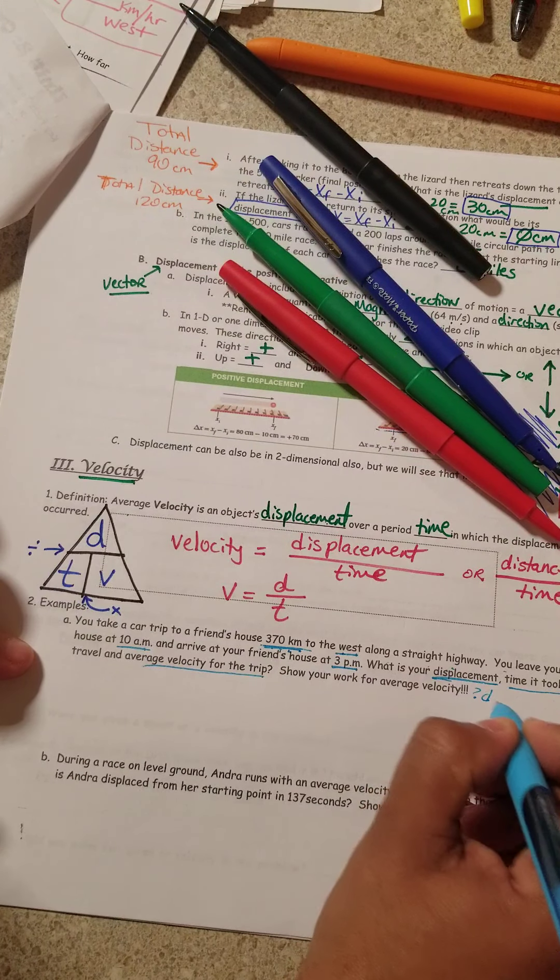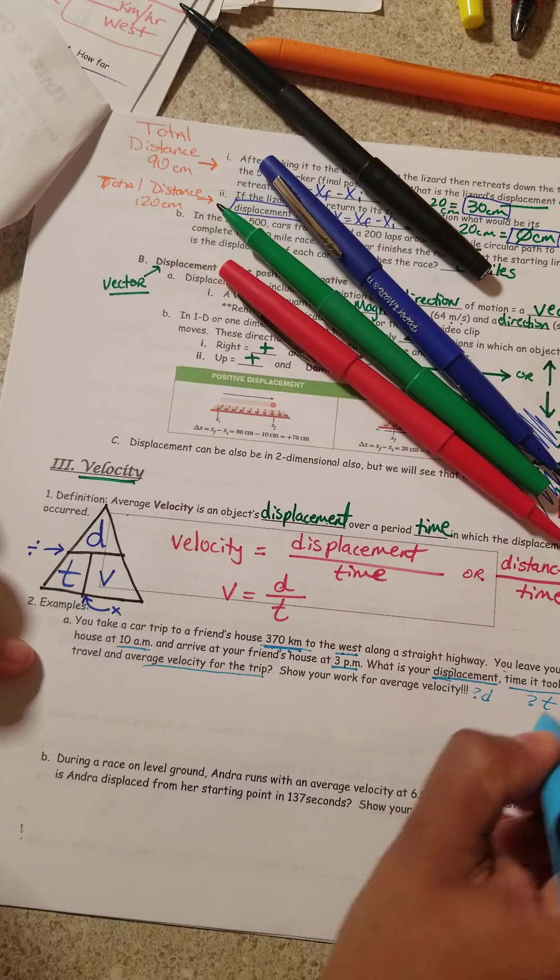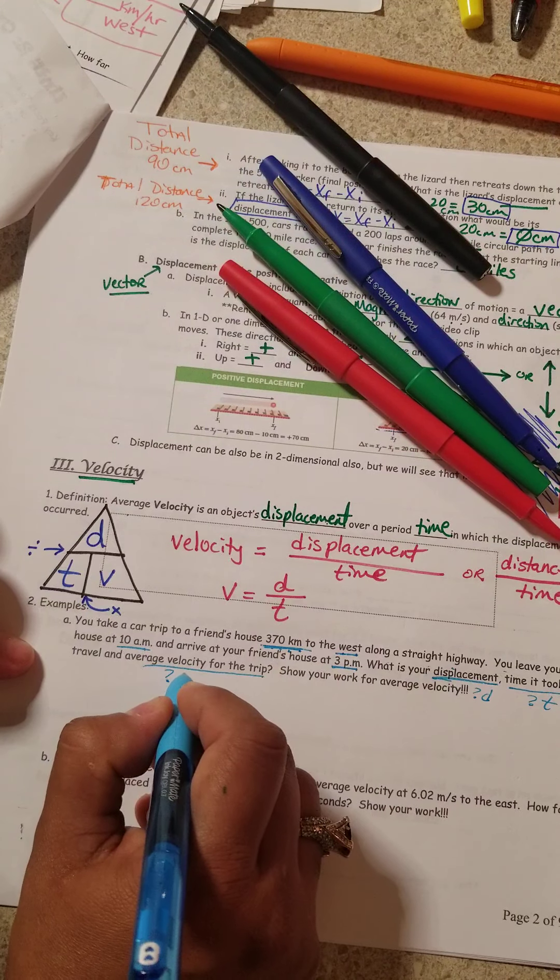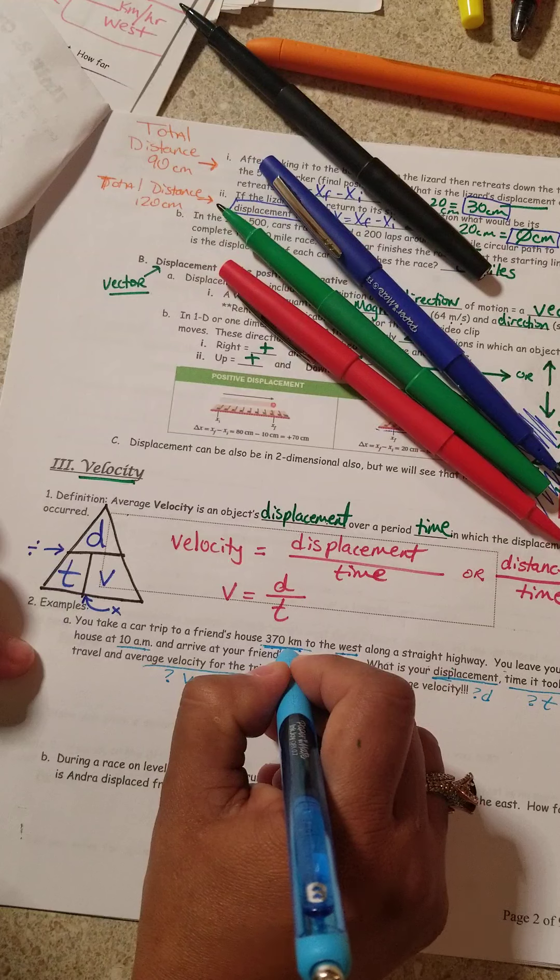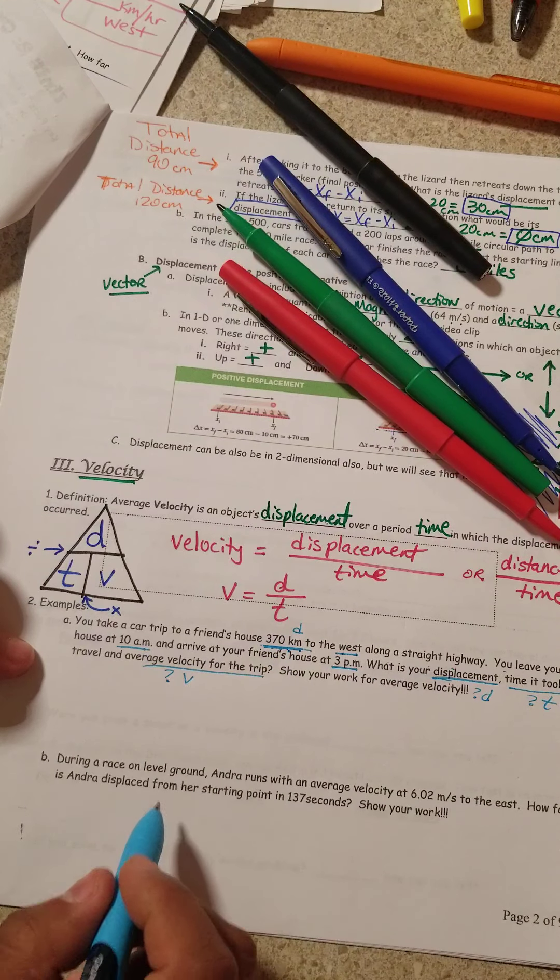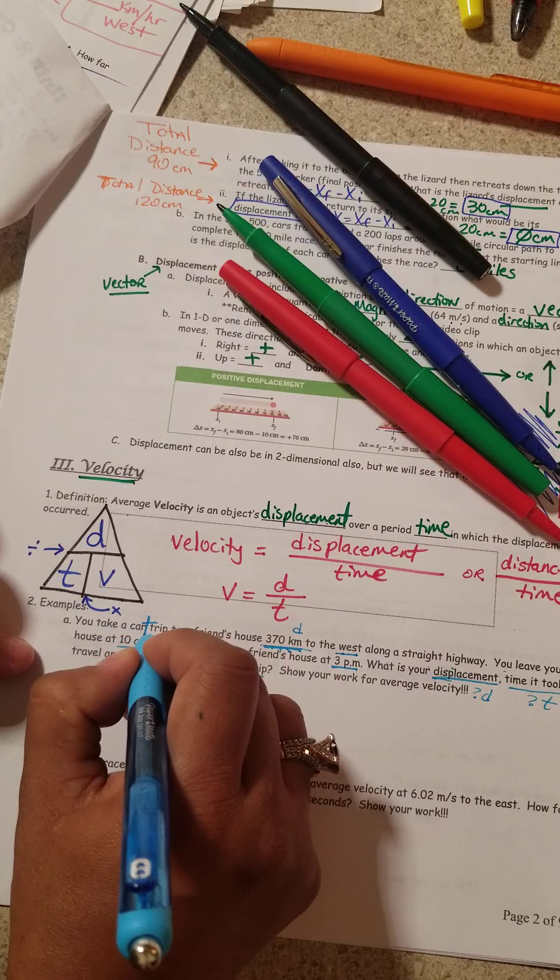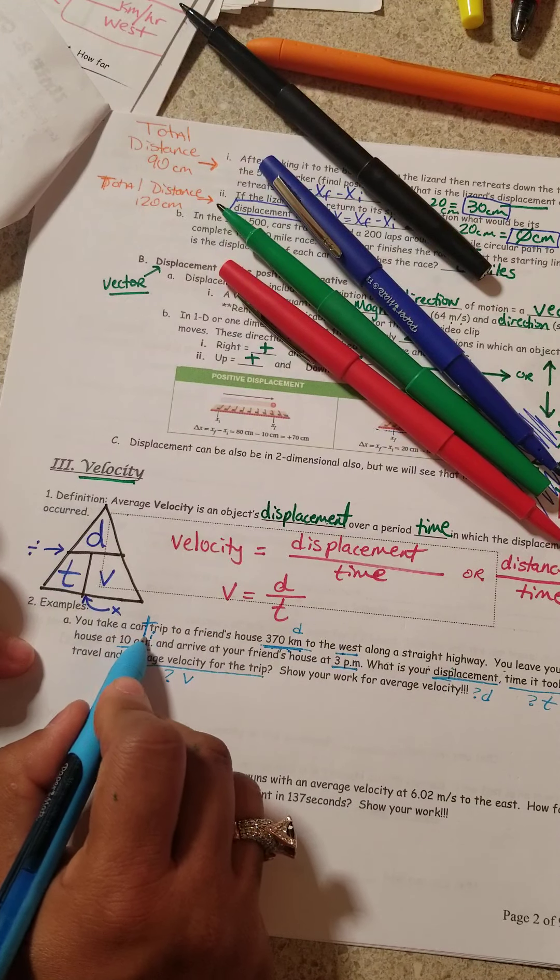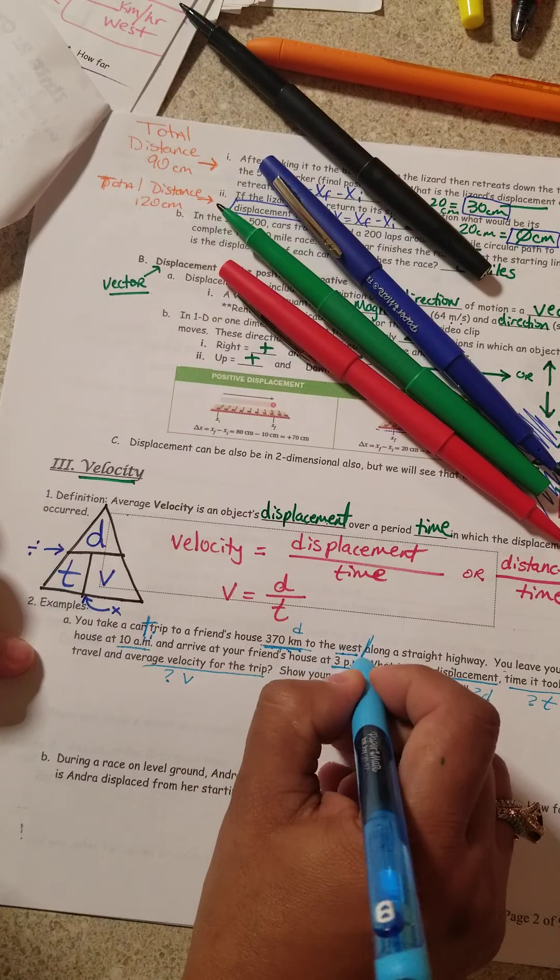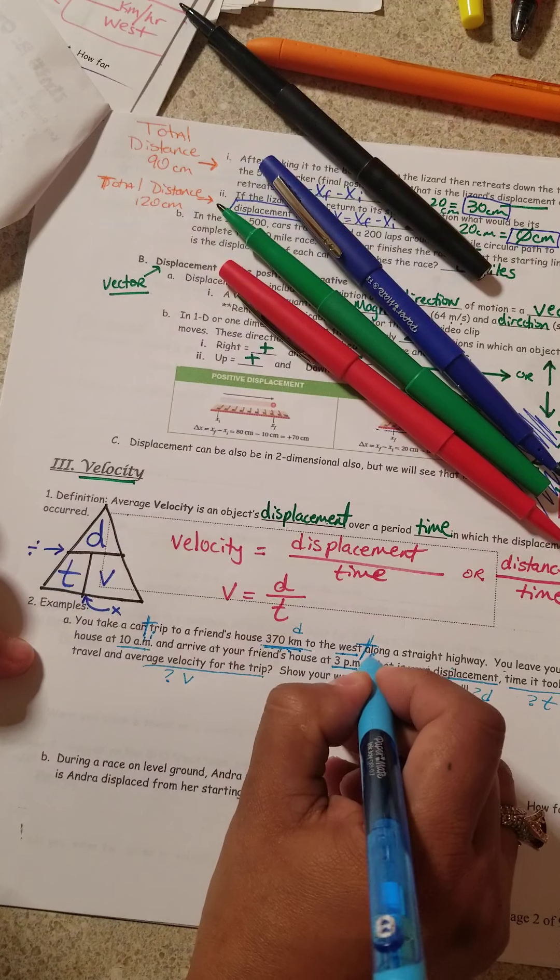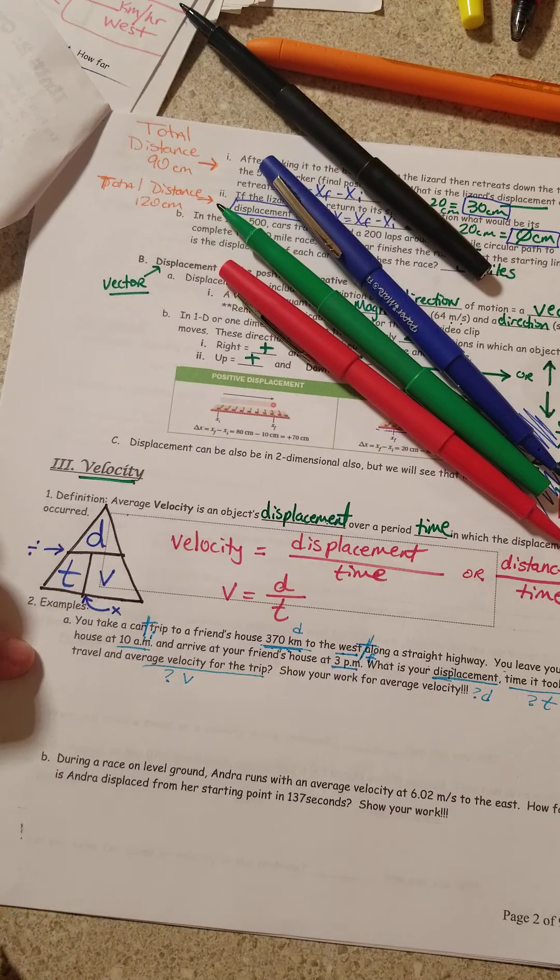Question mark. What is the d? Lowercase d. Question mark. What is the t? Question mark. What is the v? This right here is my distance. And this is going to be my t sub i, my initial time. And this is going to be my t sub f, my final time.